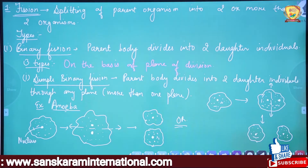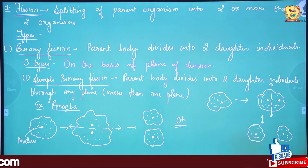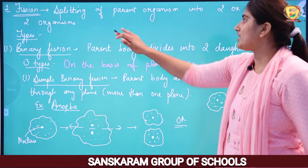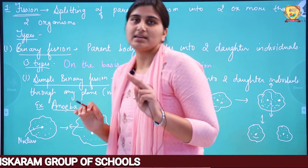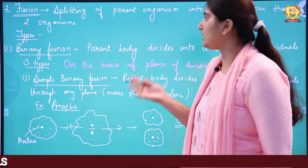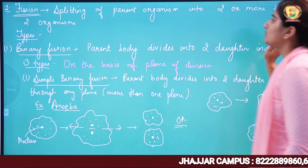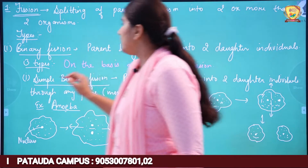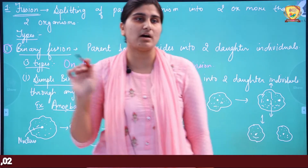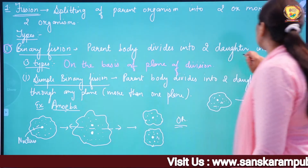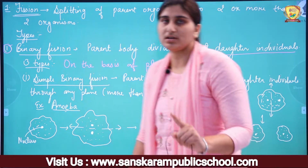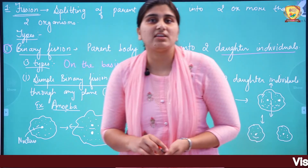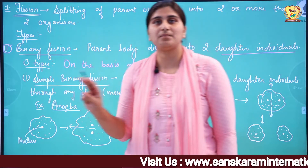Coming to the first one — Fission. Please take a screenshot. Fission means the splitting of an organism: the parent body divides into two or more parts and new individuals are formed — splitting of a parent organism into two or more organisms. Fission has two types: Binary Fission and Multiple Fission. Binary means two, so in binary fission the parent body divides into two daughter individuals.